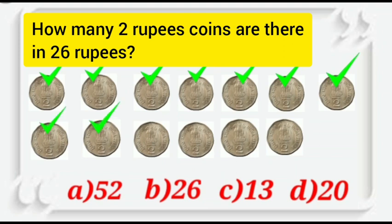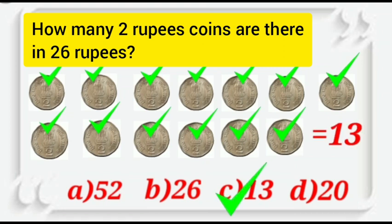11th. 12th. And 13th. Total 13 coins have been used here. So, option C is the right answer. And we will put a tick mark here.